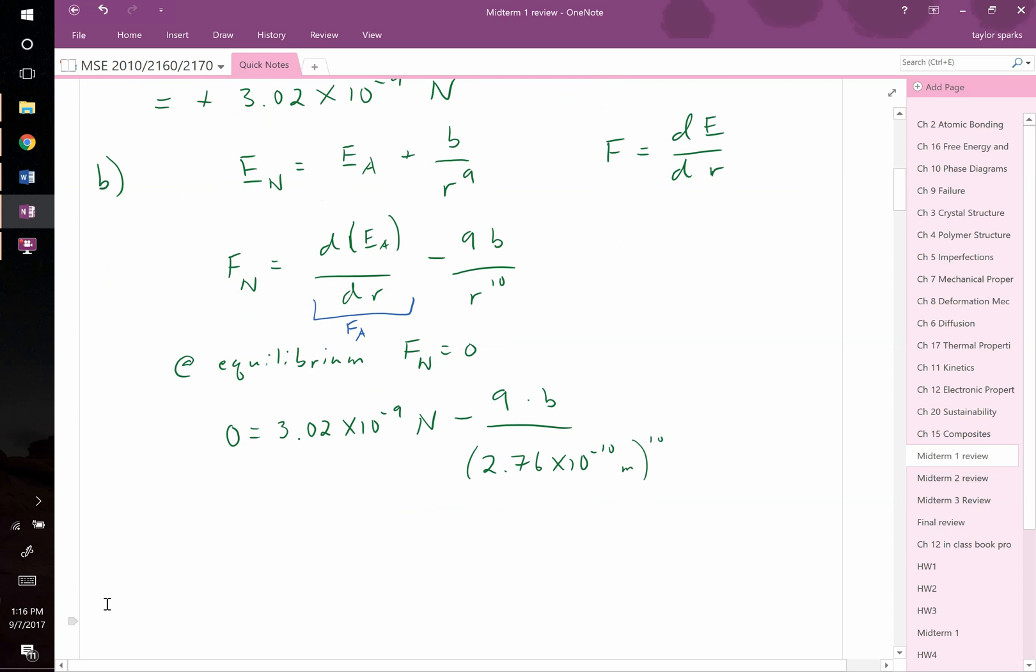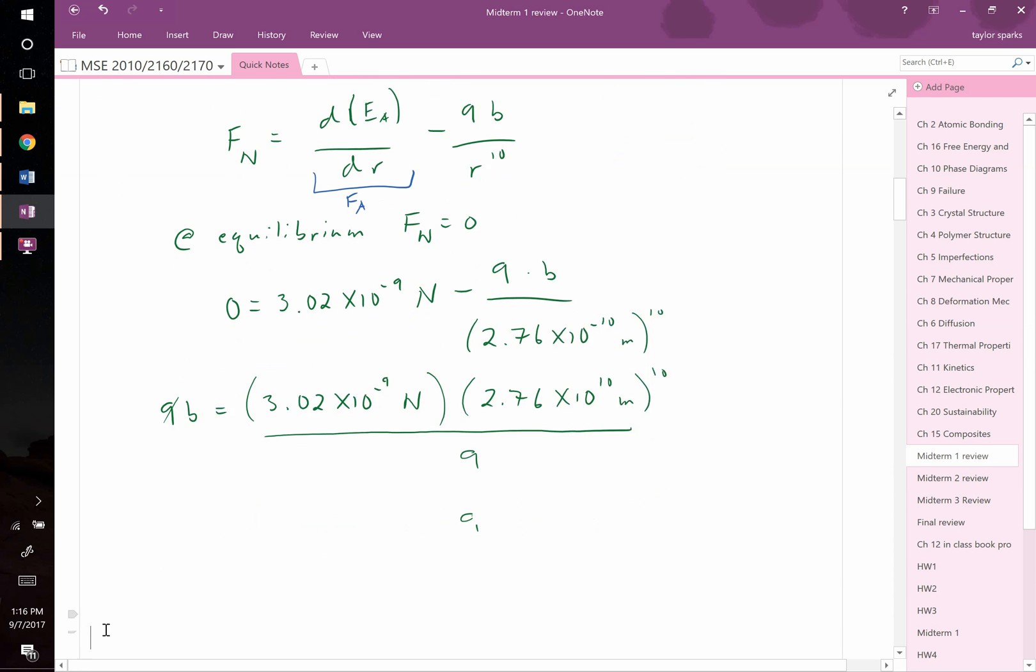Now this lets us write that 9B equals 3.02 times 10 to the negative 9 newtons, that will be multiplied by 2.76 times 10 to the 10th meters, that's all raised to the 10 power. If we then divide this by 9, we get rid of the 9 there, and that's going to be the value for B. So let's go ahead and plug those values in.